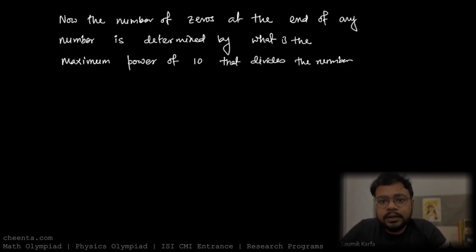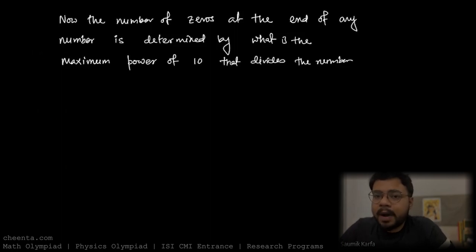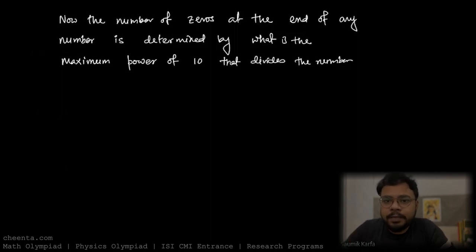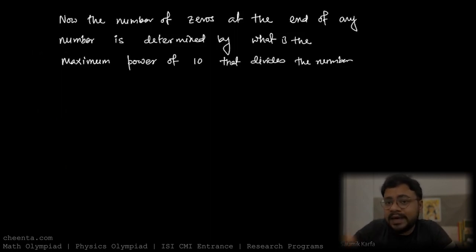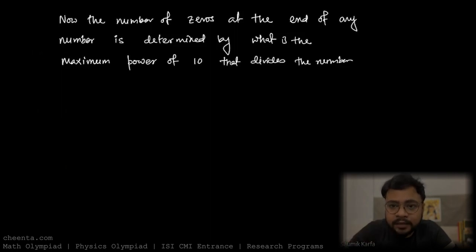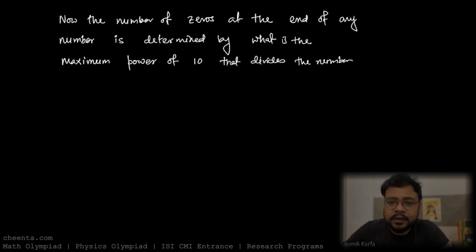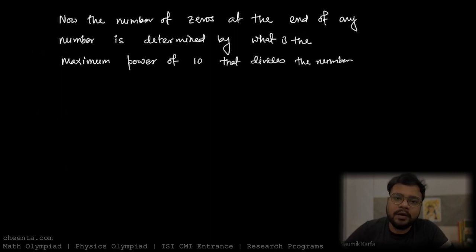The number of zeros at the end of any number is determined by the maximum power of 10 that divides it. If 10 to the power k divides a number, that number ends with k zeros. So the trailing zeros are determined by factors of 10.